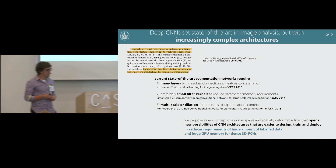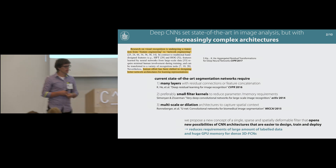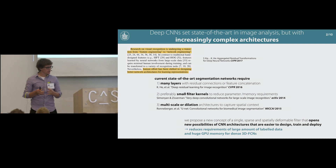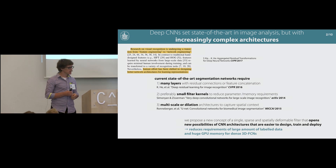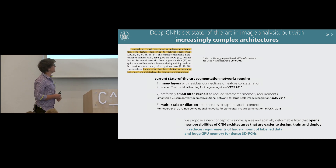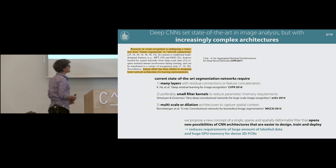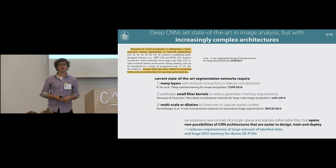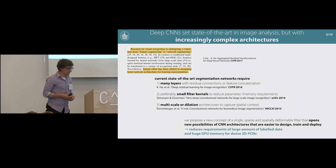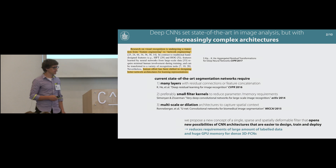To deal with this increasing complexity of architectures, we propose a new concept that uses a single sparse and spatially deformable filter, and hopefully opens new possibilities for CNN architectures that are easier to design, train, and deploy, but can also work with fewer labeled data and less GPU memory, while still achieving high accuracy of deep networks.